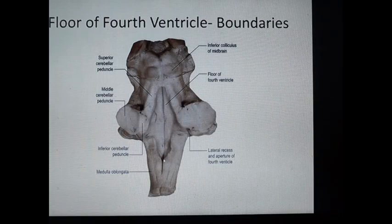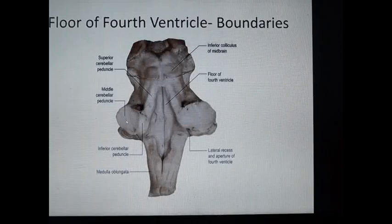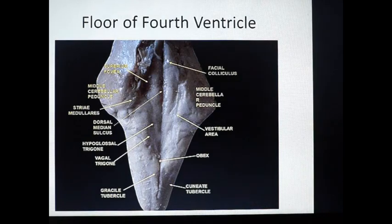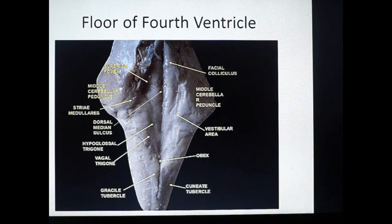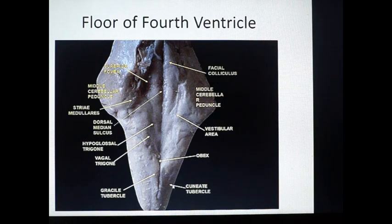Below we can see the central canal of the medulla continuing down near the obex, and on either side is the middle cerebellar peduncle. The median sulcus divides the floor into two halves. In the upper part of the floor we can see the facial colliculus — a round elevation on the dorsal side of the pons. Inferiorly is the hypoglossal triangle medially, below it the vagal trigone. The tip is called the obex, lateral to which is the gracile tubercle, and the lateral area common between pons and medulla is the vestibular area.